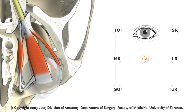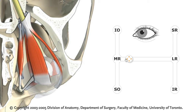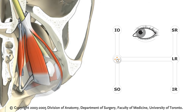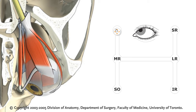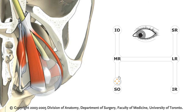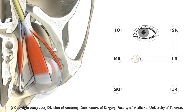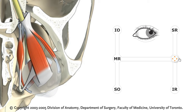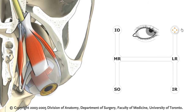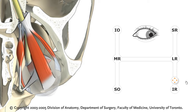We have six cardinal positions of gaze where you test eye movements. We move medially using the medial rectus muscle. When our eyes are in this position closest to the nose, we look up using the inferior oblique and look down using the superior oblique. Similarly, we can look laterally — we use the lateral rectus when our eyes are staring forward, and we add the superior rectus to look up and the inferior rectus to look down.